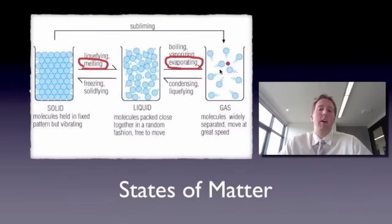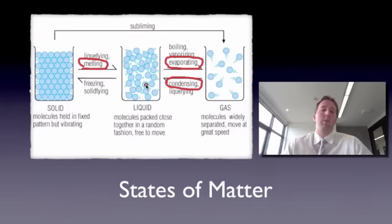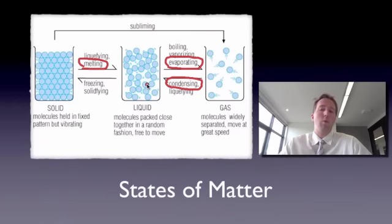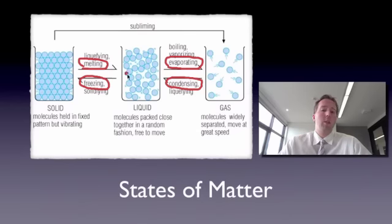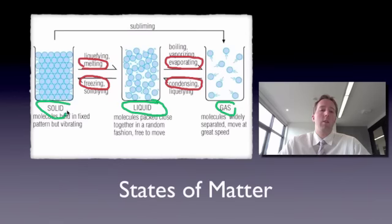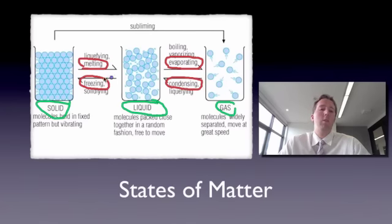If you have water as a gas — steam, maybe in your shower — that steam can condense back into a liquid. That's why you get little drips of liquid running down the side of your shower if you have a really hot shower. Also, if you've got liquid water and you want to make it frozen, make some ice again, all you'd have to do is put it back in the freezer. So: solid to liquid by melting, liquid to gas by evaporating, gas to liquid by condensing, and liquid to solid by freezing.